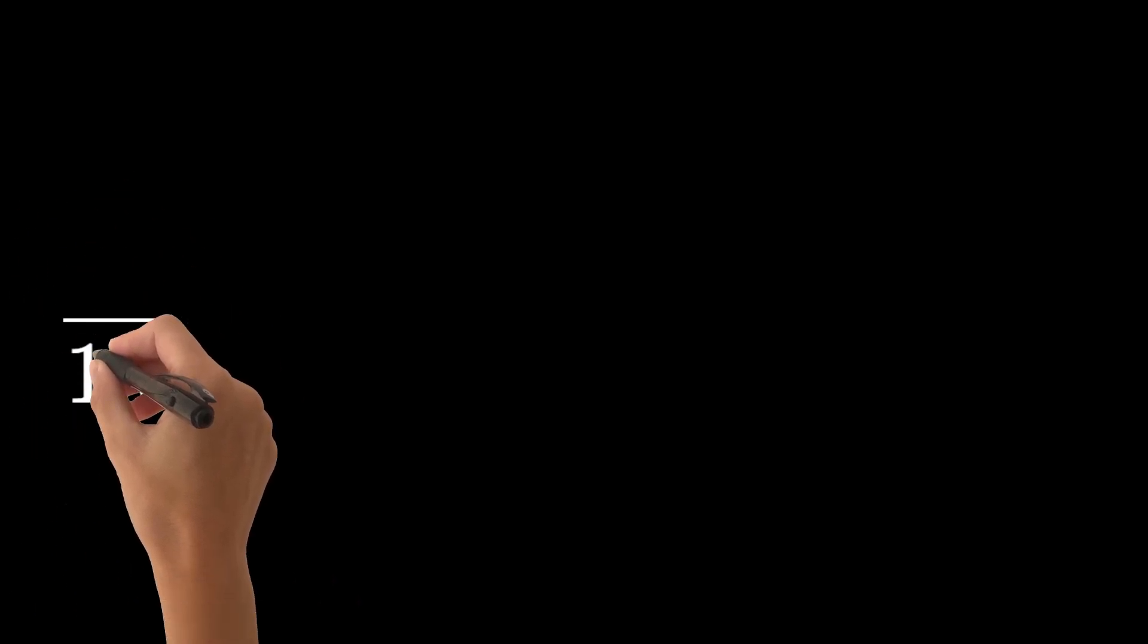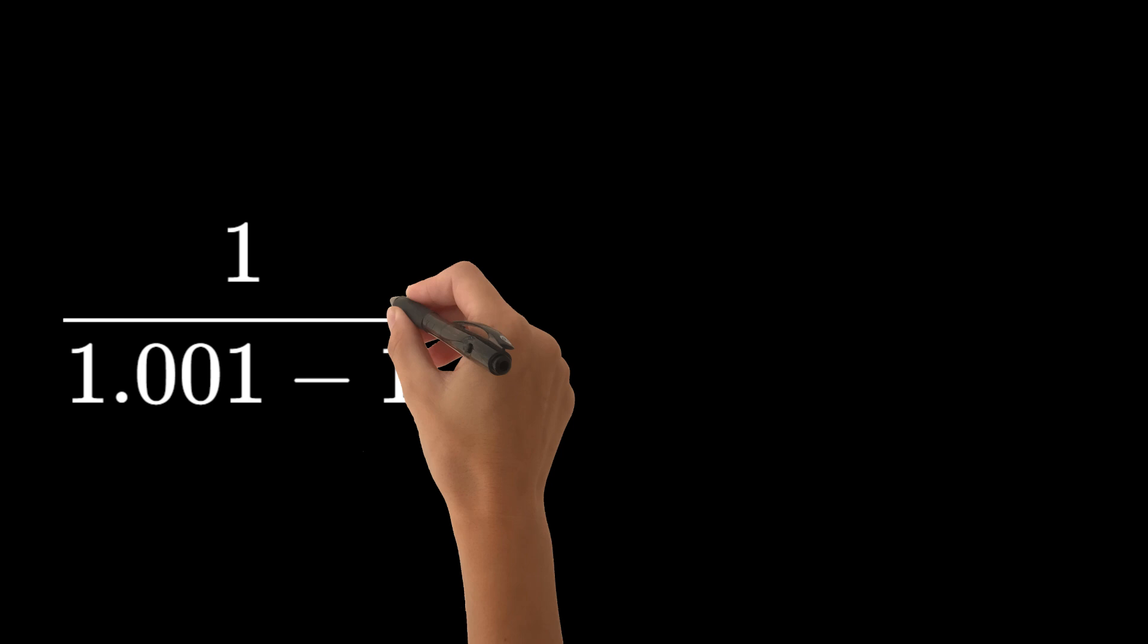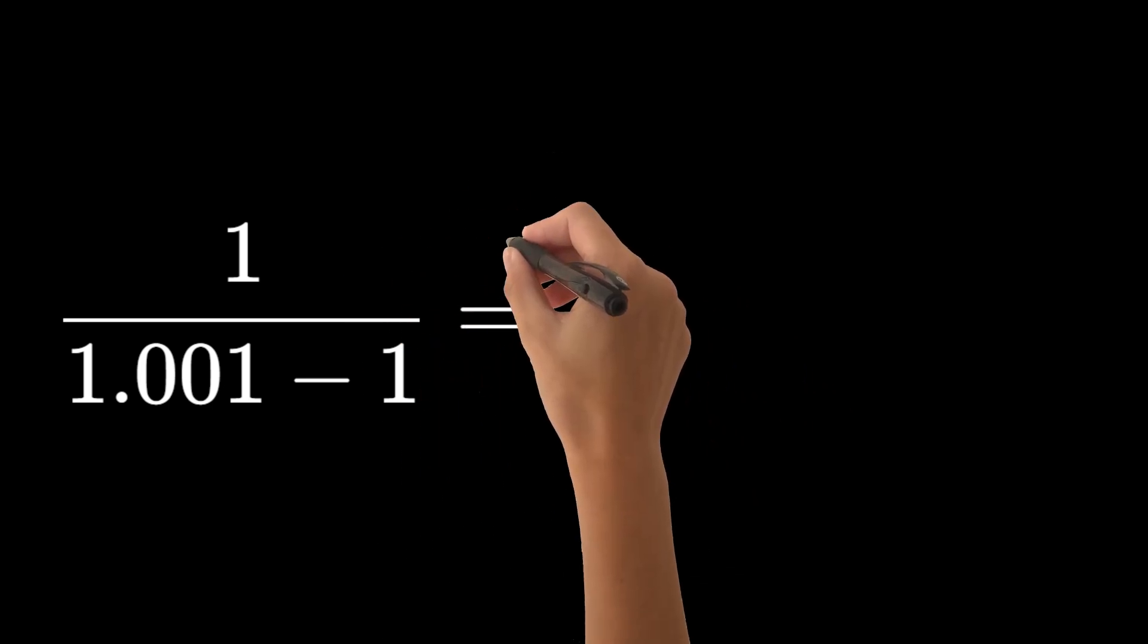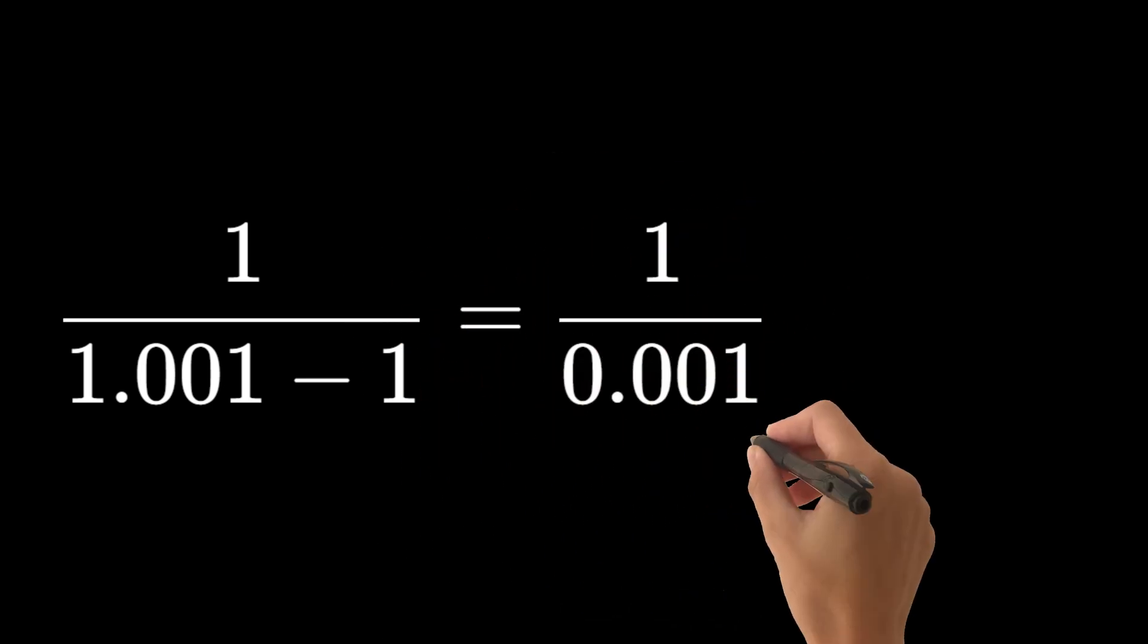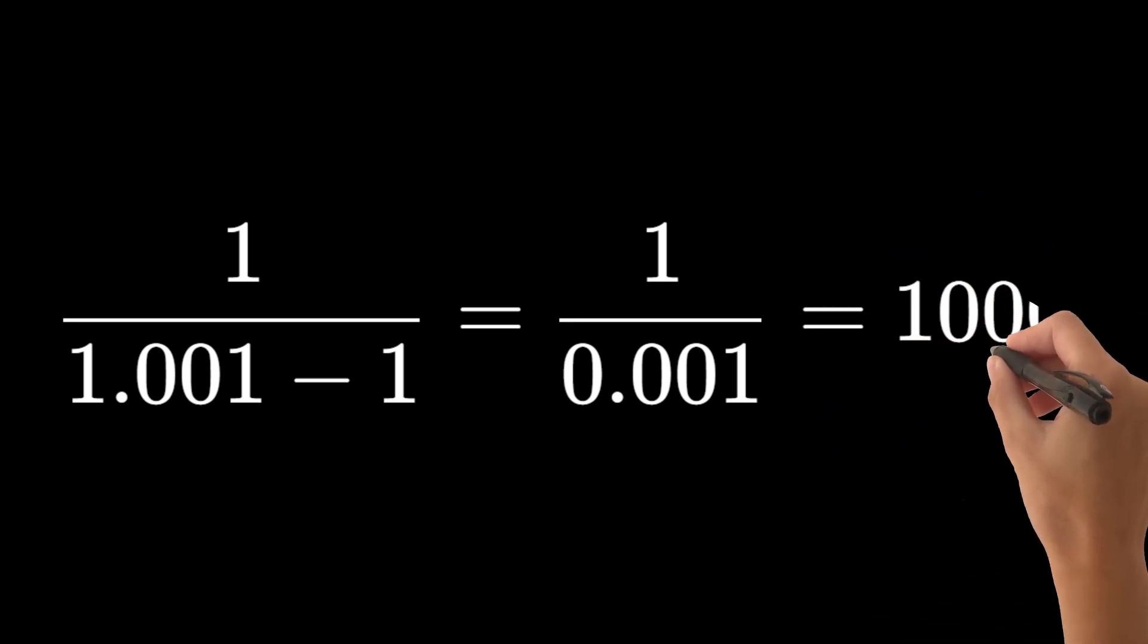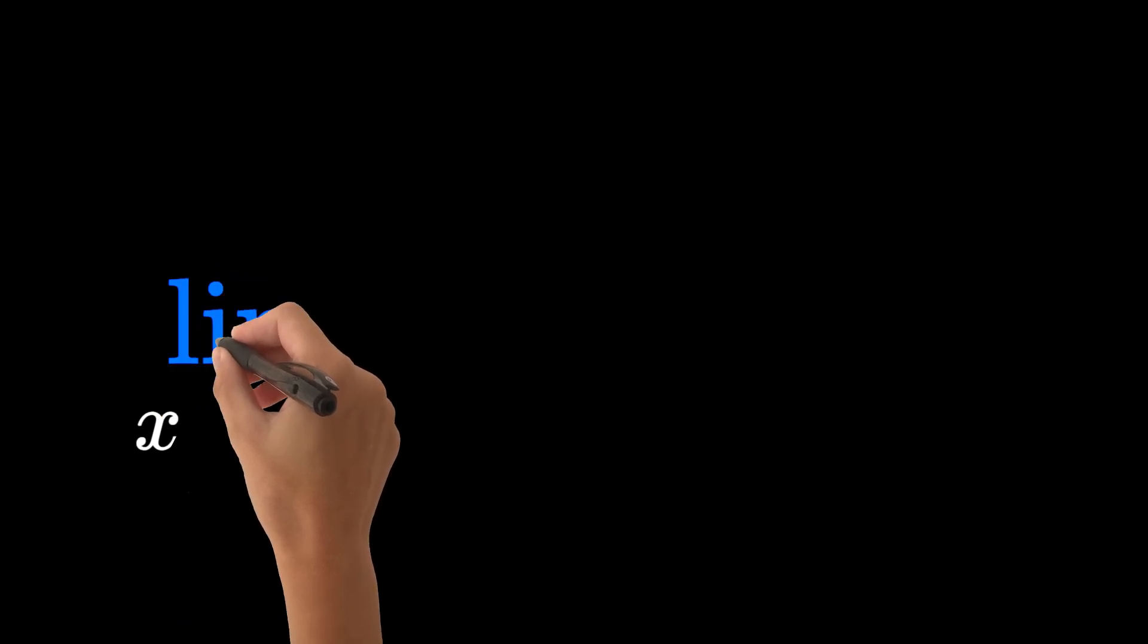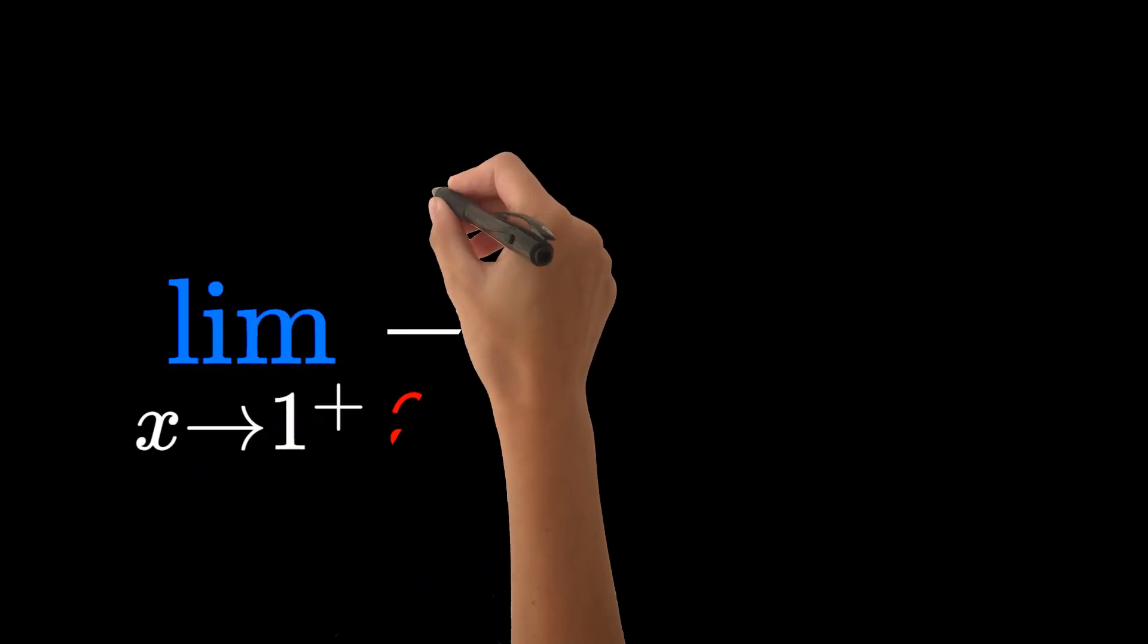To understand this limit, we can replace x with a value like 1.001 and calculate: 1/(1.001 - 1) = 1/0.001 = 1000, a large positive value. We could repeat the calculation with more inputs, but the pattern holds, so the limit as x approaches 1 from the right of 1/(x - 1) is positive infinity.